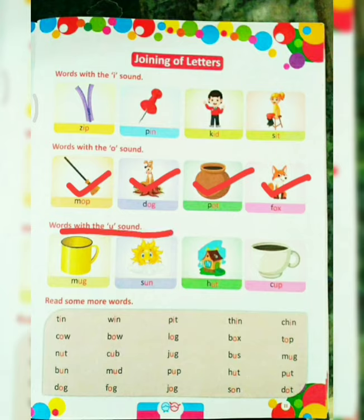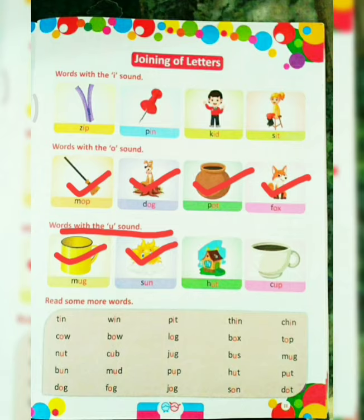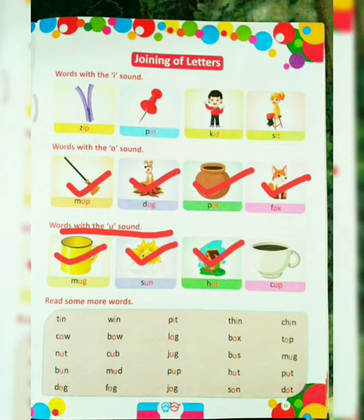Now the words with the U sound. First word is Mug — M-U-G — mug. Sun — S-U-N — sun. Hut — H-U-T — hut. Cup — C-U-P — cup.